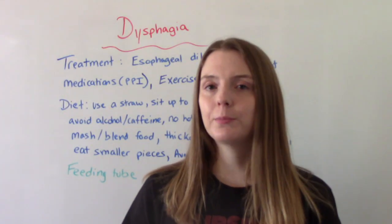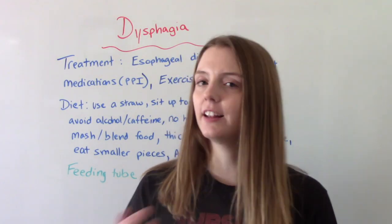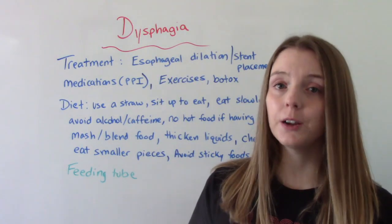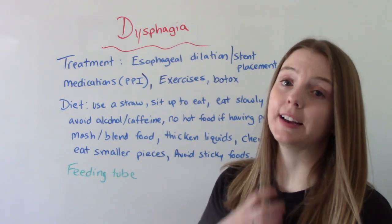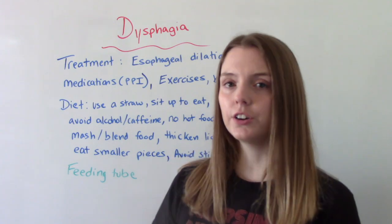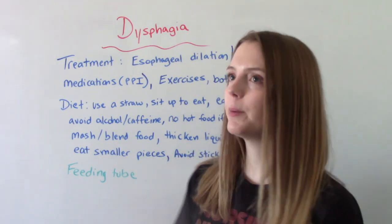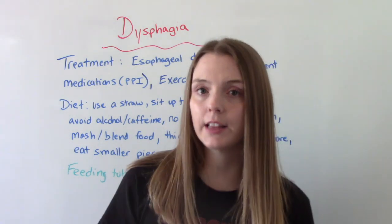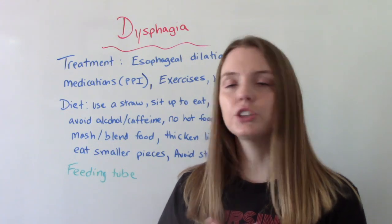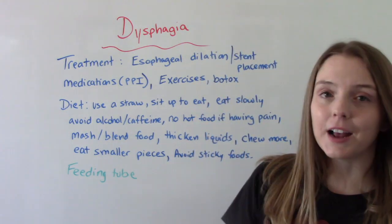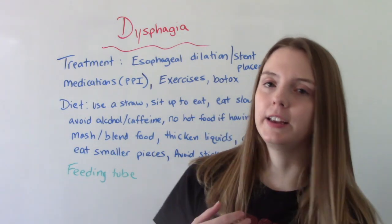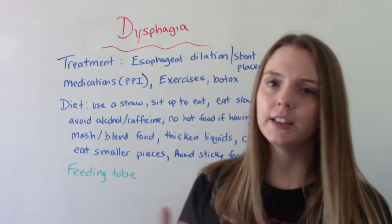When it comes to treatment, it's really going to depend on the severity and the cause. So there's a variety of options. They might choose to do surgery, which can include esophageal dilation or putting in a stent. They might recommend certain medications, especially if you're having GERD or heartburn — like a proton pump inhibitor. Special exercises can be taught by a speech language therapist. And sometimes they even use Botox to help paralyze the muscles to make swallowing easier, though this is temporary and only lasts for a couple of months.